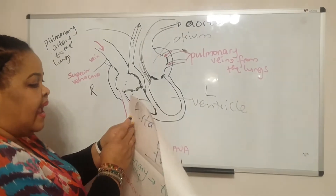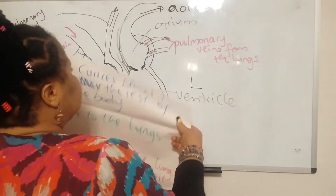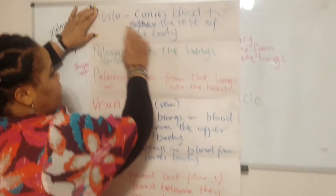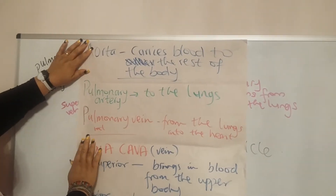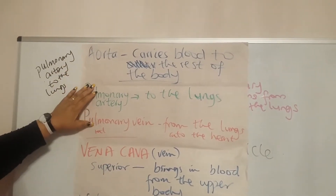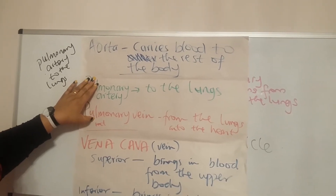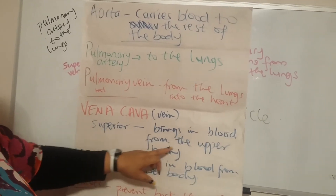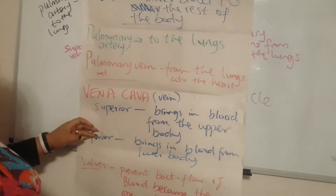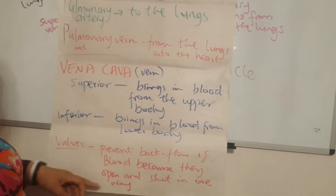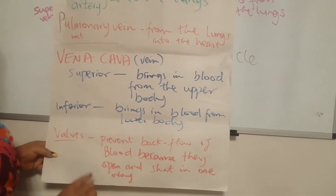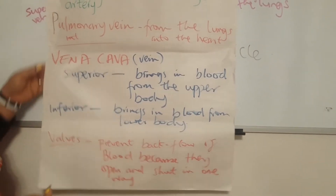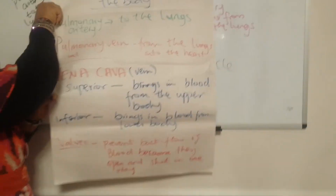Here is a simplified summary list: the aorta carries blood to the rest of the body; the pulmonary artery carries blood to the lungs; the pulmonary vein brings oxygenated blood from the lungs into the heart; the superior vena cava brings blood in from the upper body; the inferior vena cava brings blood from the lower body. Valves are important because they prevent backflow of blood — they open and shut in only one direction.